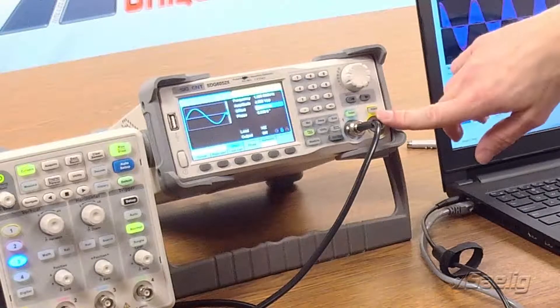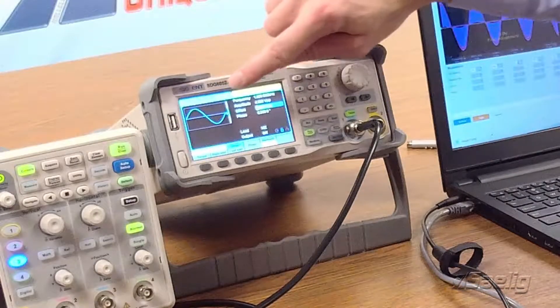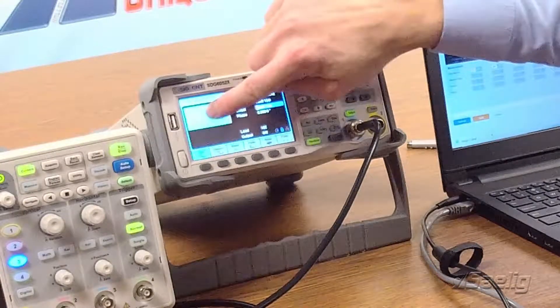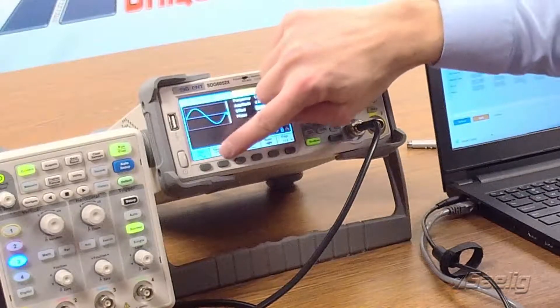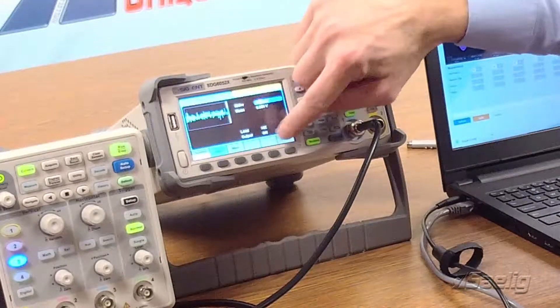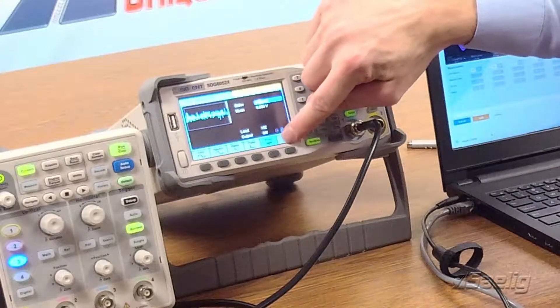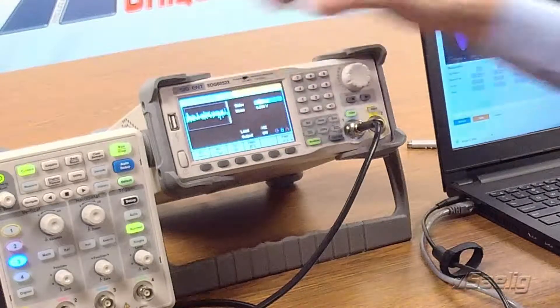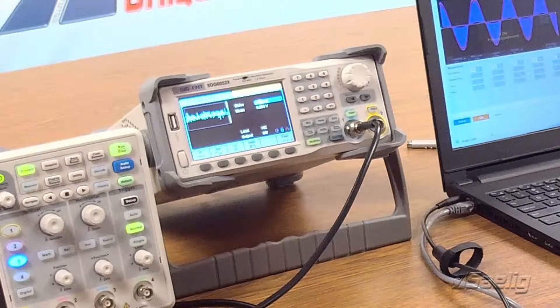So here we've got the two channels. It is truly a fantastic box to work with. We've got a touchscreen capability. We can quickly change between sine, square, ramp, pulse, noise, and two new output features for our instrumentation line. We've got IQ capability as well as PRBS or pseudo-random bit sequence.